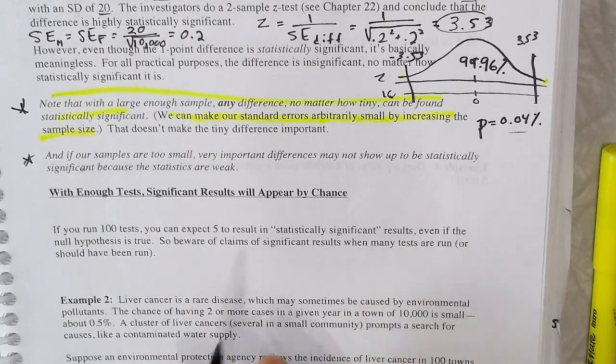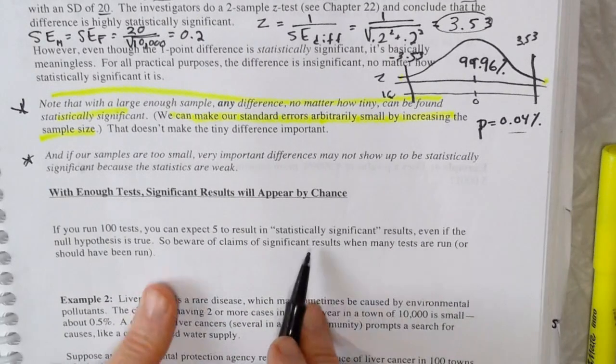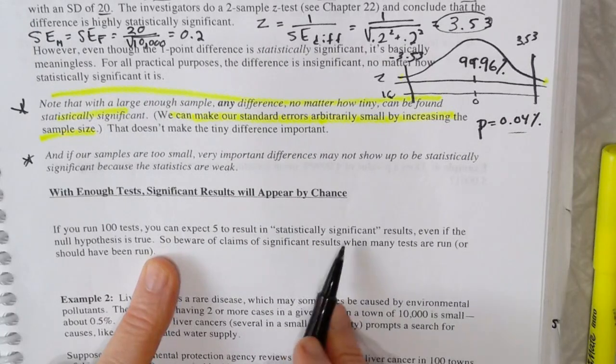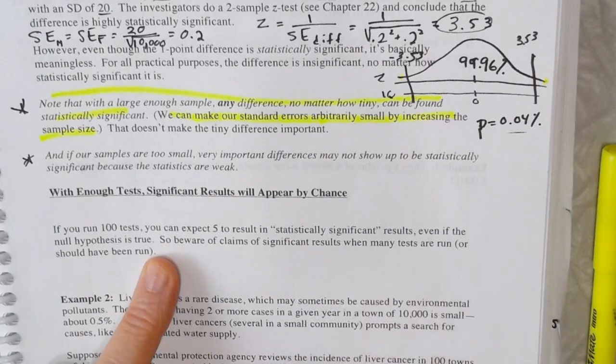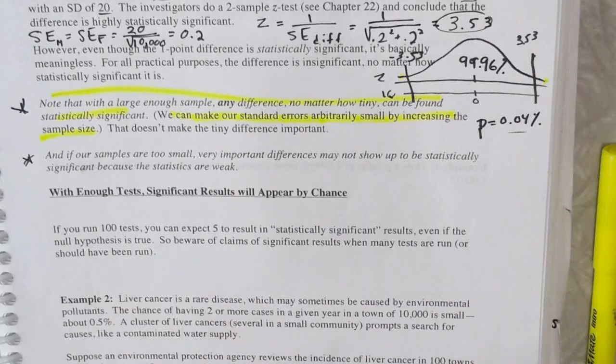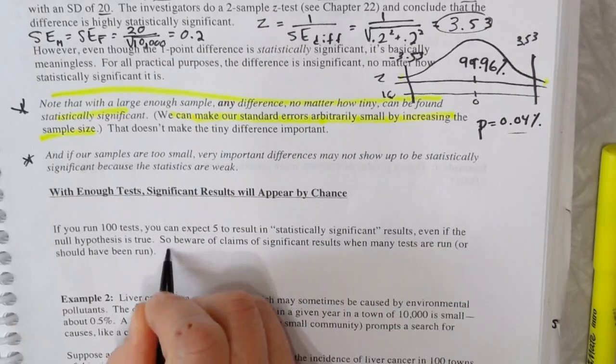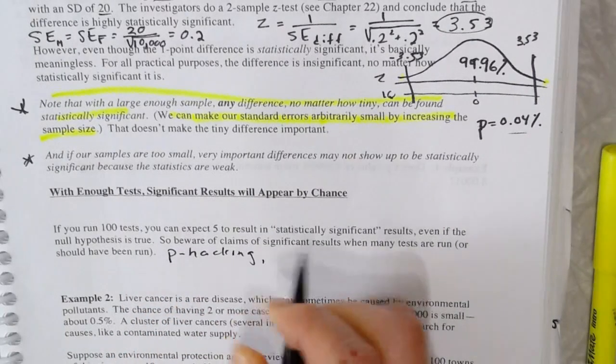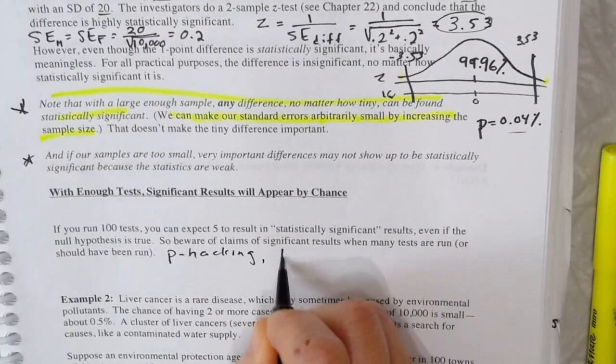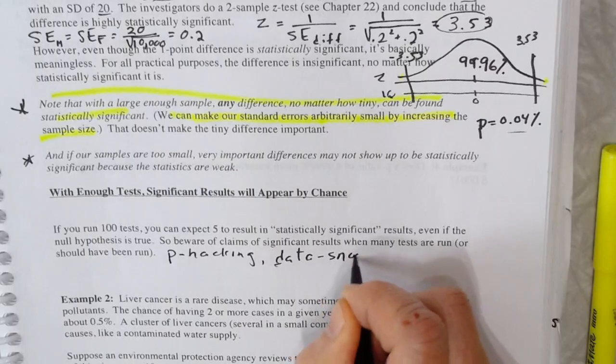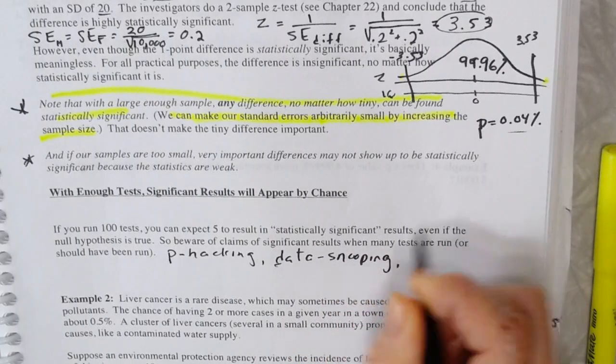So if you run the test a hundred times and just show the five results that you got to be statistically significant, that defeats the whole purpose. And that would be cheating or p-hacking is what it's often called. So beware of p-hacking, looking over all the results, data snooping, basically cheating.